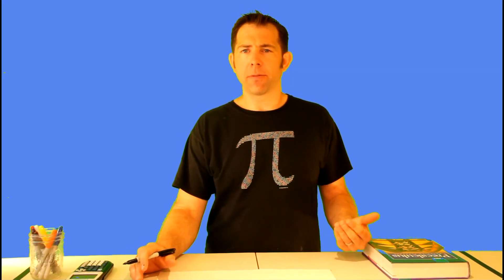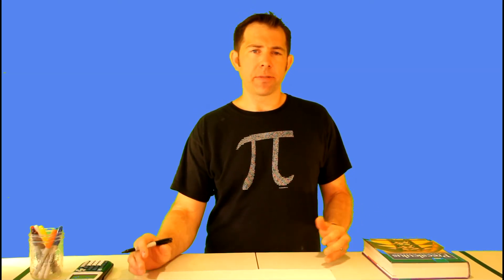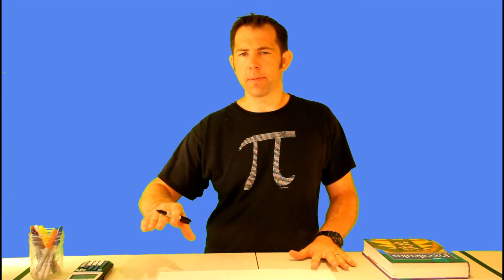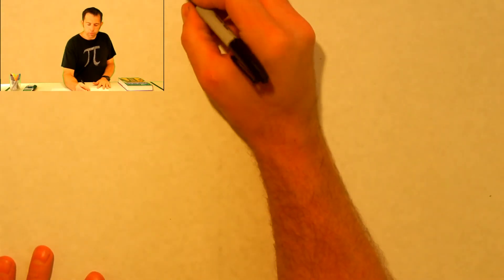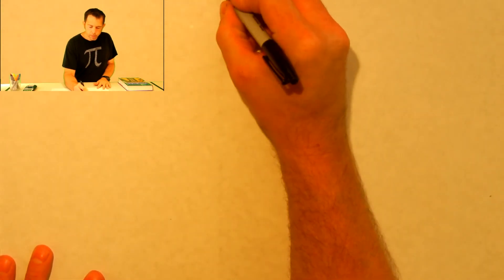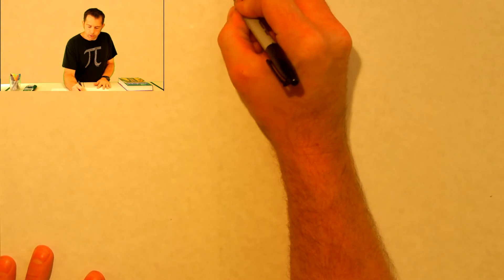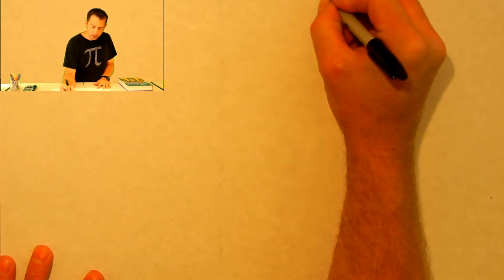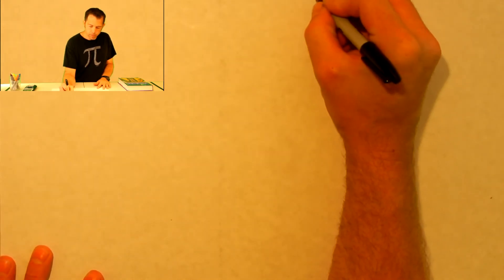When you have a sequence, one thing you want to do is see if it actually follows a pattern. Because if it does, we can probably write a formula to represent that pattern to find terms that are further down the sequence. In our example, the sequence is 2, 4, 6, 8, and so on.